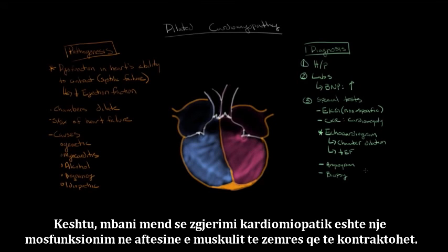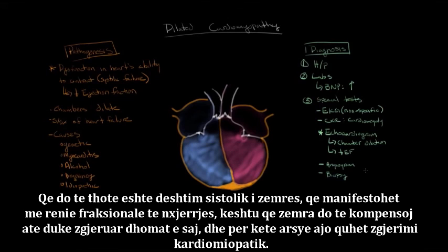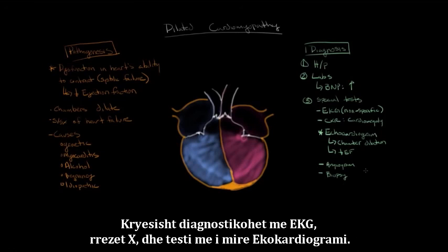To summarize: dilated cardiomyopathy is a dysfunction in the heart's ability to contract, making it a systolic heart failure that manifests as a decreased ejection fraction. The heart compensates by dilating its chambers — which is why it's called dilated cardiomyopathy. It is diagnosed primarily with an EKG, a chest x-ray, and most definitively with an echocardiogram.